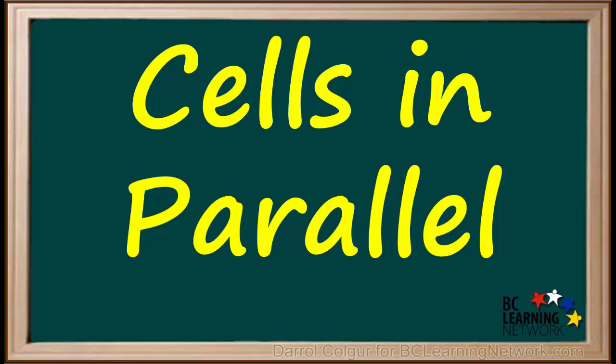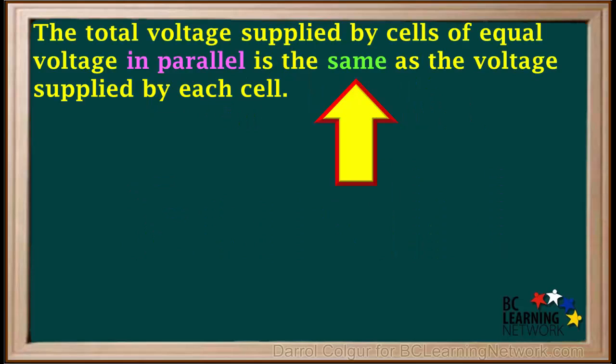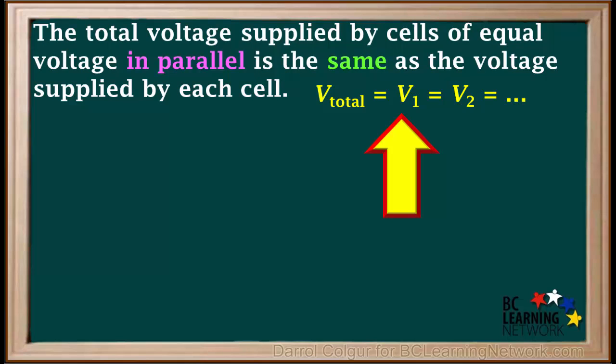Cells in parallel behave differently than cells in series. The rule is: the total voltage supplied by cells of equal voltage in parallel is the same as the voltage supplied by each cell. In this course, any cells that are in parallel will be of equal voltage. The equation we can use for cells in parallel is V_total equals V1 equals V2, etc.